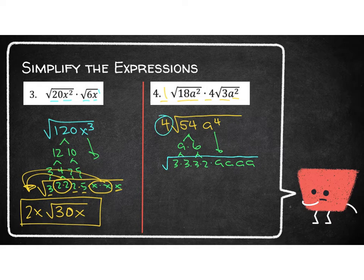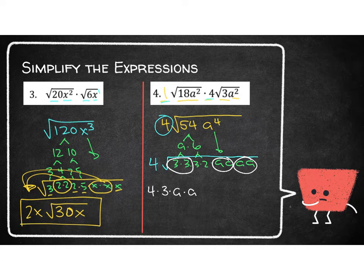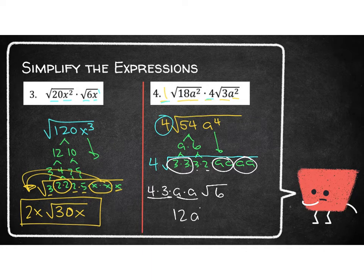Don't forget that this 4 is on the outside already from the 1 times 4. Now look for pairs underneath. I can take out a pair of 3s, a pair of a's, and another pair of a's. So outside I now have 4 times 3 times a times a. Left underneath I have 3 times 2, which is 6. That puts together to give 12a squared times the square root of 6.